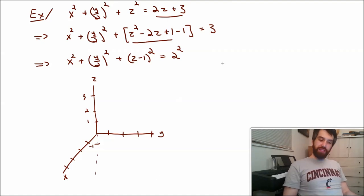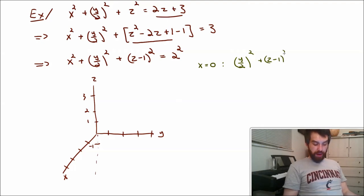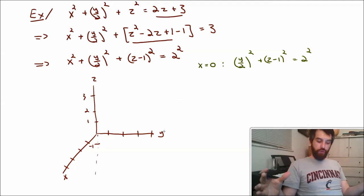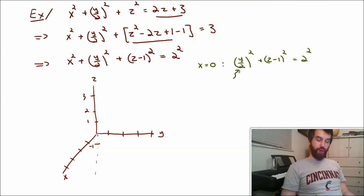So let's try to make sense of this by doing some cross sections as we've done before. Maybe I'll take the x equal to 0 case first. So this cross section where I've input that value is going to be y squared plus z minus 1 squared is equal to 2 squared. And we've seen these before. This is the equation not of a circle, but of an oval.